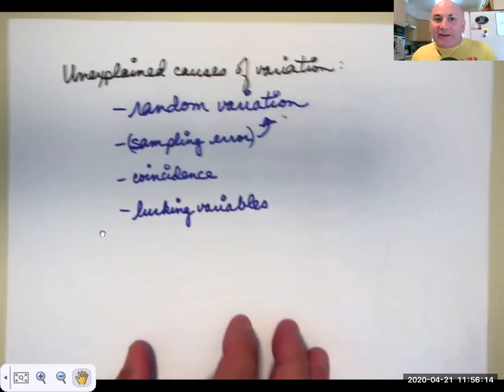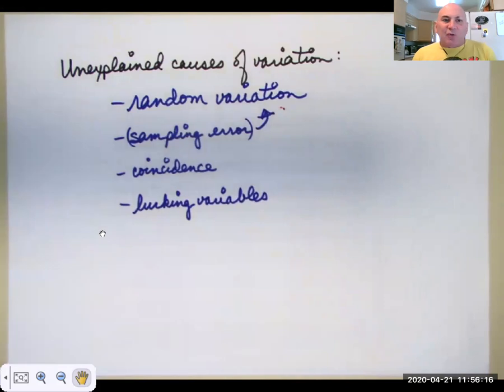So we didn't really discuss what might be some of these unexplained causes of variation. Well, it could just be random variation, which is a sampling error. And again, error doesn't mean mistake. It just means variation. So this time I got these data points when I sampled. Next time I'd get a different set of data points when I sampled. Could just be coincidence, could be lurking variables. And then we don't know what's causing it. That's why it's unexplained.